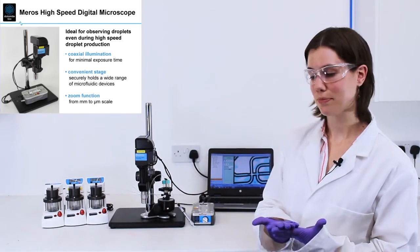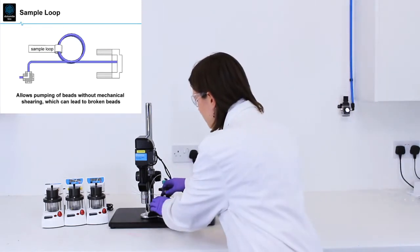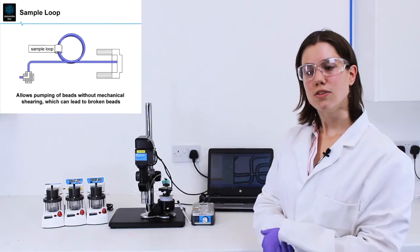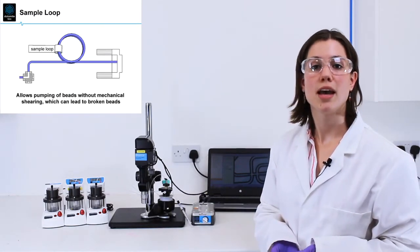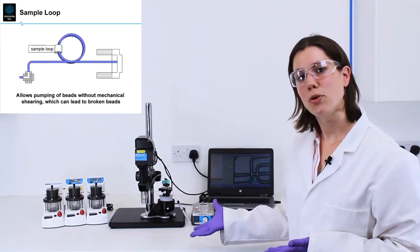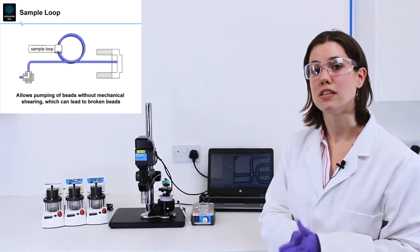To inject beads into the system, we use a sample loop. The reason for this is because beads are quite delicate and can be easily broken by mechanical shearing, and using a sample loop is a much gentler way to inject beads into the system.